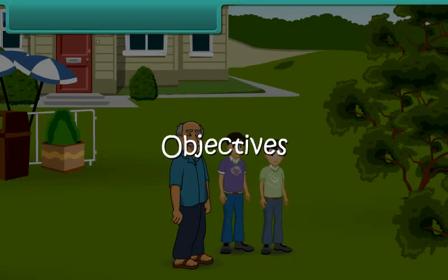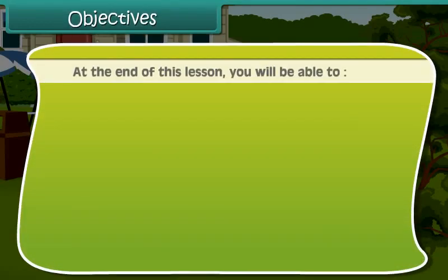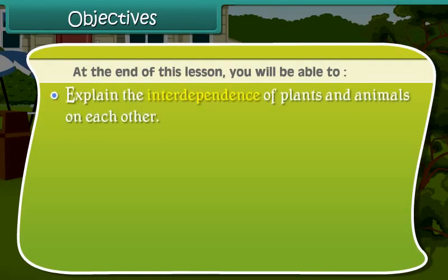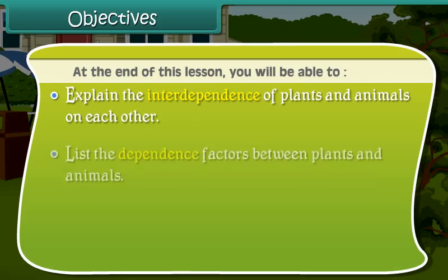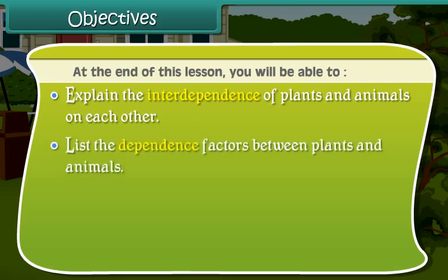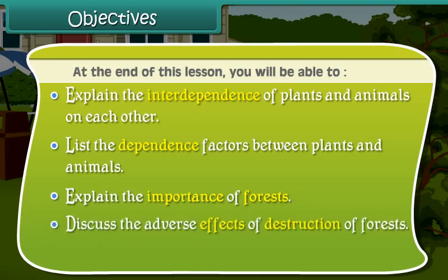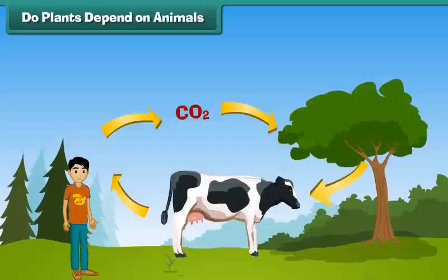Objectives. At the end of this lesson, you will be able to: explain the interdependence of plants and animals on each other; list the dependence factors between plants and animals; explain the importance of forests; discuss the adverse effects of destruction of forests; and discuss forest and wildlife protection.